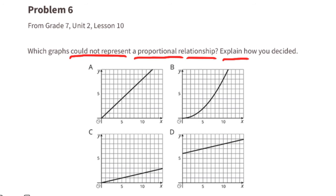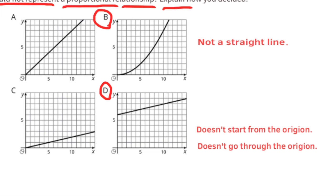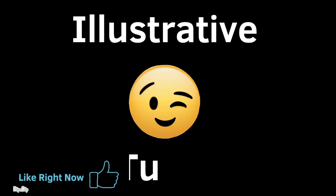Problem 6 from 7th grade Unit 2 Lesson 10: Which graphs could not represent a proportional relationship? Graph A has a straight line starting at the origin — proportional. Graph C is a straight line starting at the origin — proportional. Graph B has a curved line, so it does not represent a proportional relationship even though it starts at the origin. Graph D is not proportional because it doesn't pass through the origin.